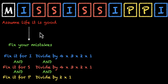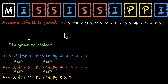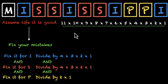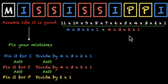Mississippi has eleven letters. So if life is good, we have 11 × 10 × 9 × 8 × 7 × 6 × 5 × 4 × 3 × 2 × 1. Now let's add the corrections: fix for I — divide by 4 × 3 × 2 × 1; fix for S — divide by 4 × 3 × 2 × 1; fix for P — divide by 2 × 1.